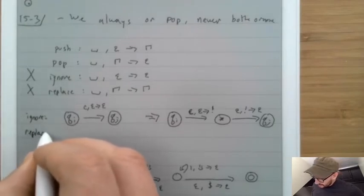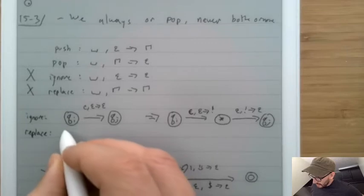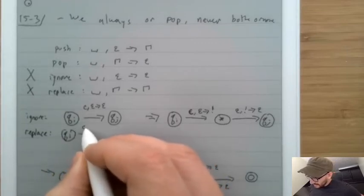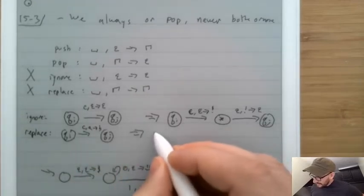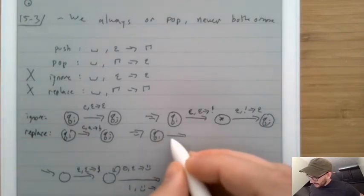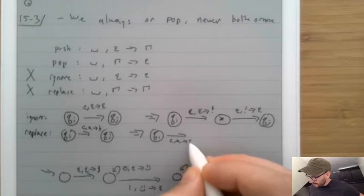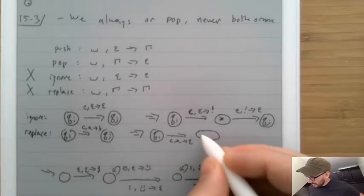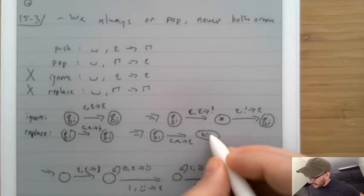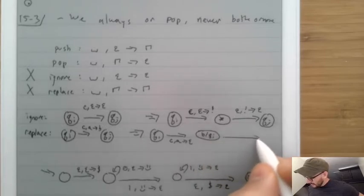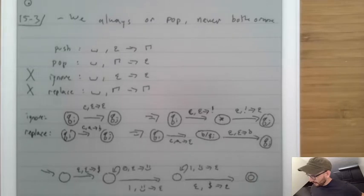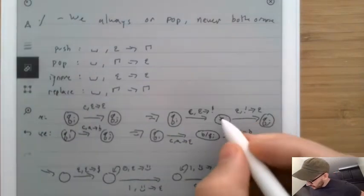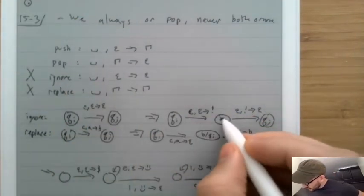For replace: if Qi transitions with c, a → b to Qj, we say Qi when it sees c and a, pops it off and goes to a state named b/Qj. That state sees epsilon, epsilon and pushes on b, then goes to Qj. We can think of this as a star/Qj state.